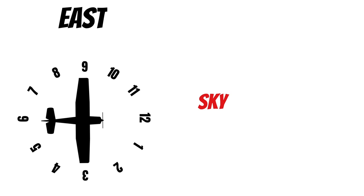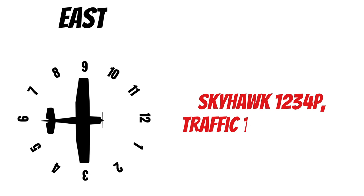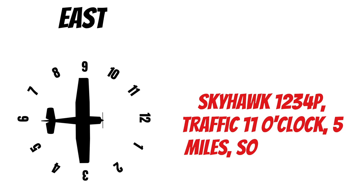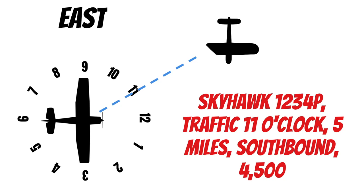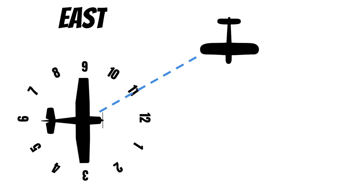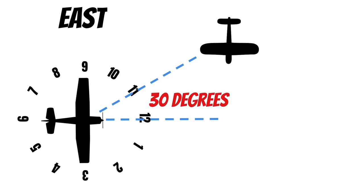Let's say we're on an easterly heading: 'Skyhawk 1-2-3-4 Papa, traffic 11 o'clock, 5 miles, westbound, 3,500.' Draw that imaginary line out from your aircraft through the 11 o'clock position — that's where you look for traffic at 3,500 feet. You could also get asked how many degrees off the nose the traffic is: every hour represents 30 degrees, so in this case the traffic is 30 degrees to the left of the nose.